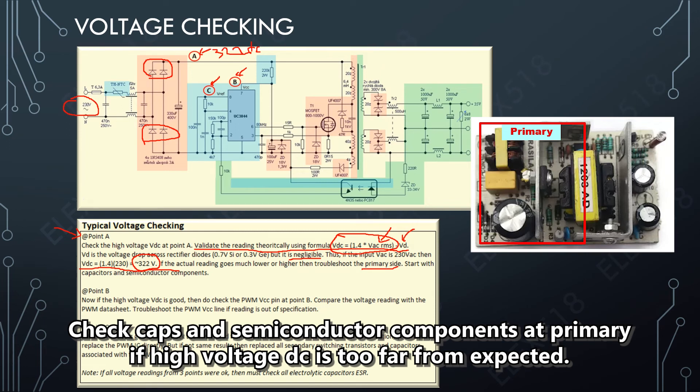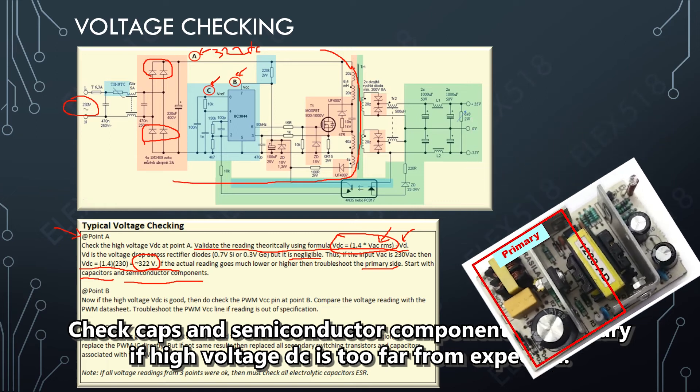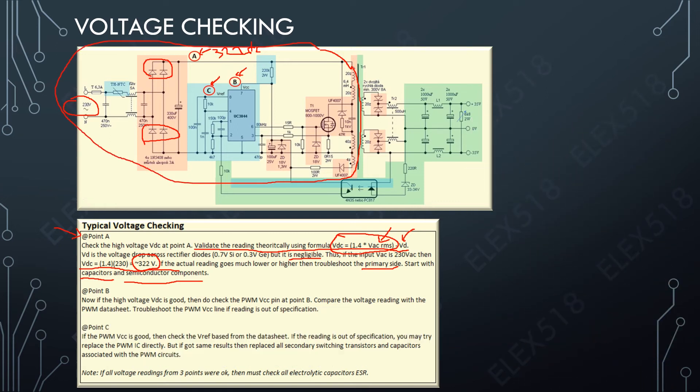I focus first on checking capacitors and then I move to semiconductor components. From the sample circuit above, the primary area is this area. Let's say the high voltage DC at point A is okay, so I move to point B.